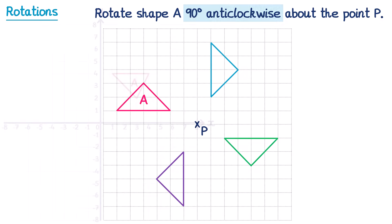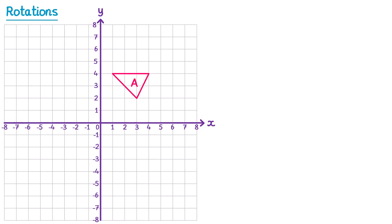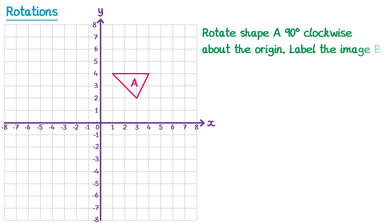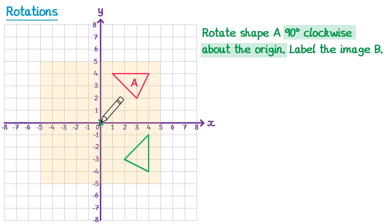More often than not, you'll have to do a question like this on a coordinate axis. The question might be worded as: rotate shape A 90 degrees clockwise about the origin, label the image B. Once again, we'll start with a piece of tracing paper, trace around the shape, then place the pencil at the point we're rotating around. This time it hasn't been marked on the grid, so we mark it ourselves. We've been told it's about the origin — that's the point (0,0). Then we place the pencil on this point and turn the shape one quarter of a turn clockwise. We lift off the tracing paper, draw the shape in this place, and label the image B.